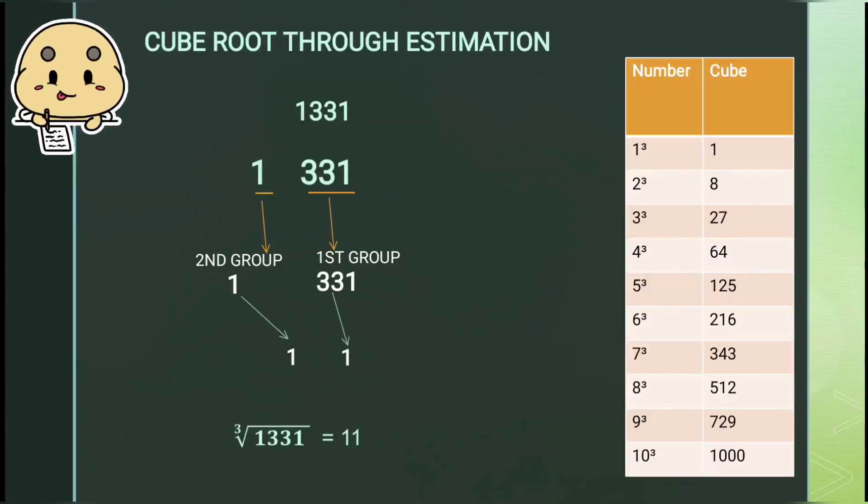Hence the cube root of the given number 1331 is 11. Now let's take some more numbers.